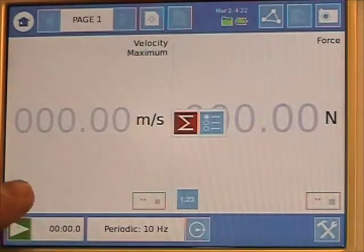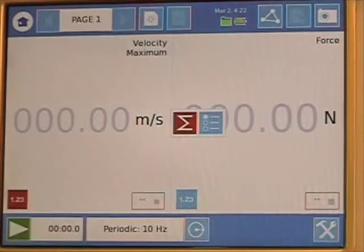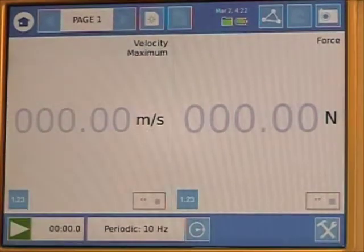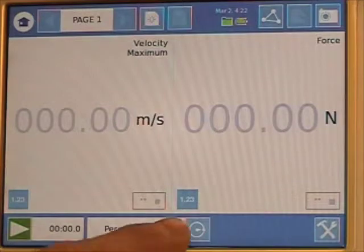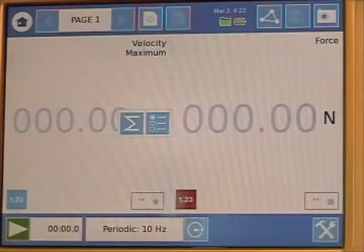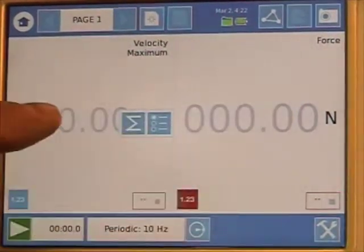We do the same thing with force. To get to the force, I press the number icon again. The sigma disappears for velocity. I press the number icon here, and now the sigma is appearing for force.